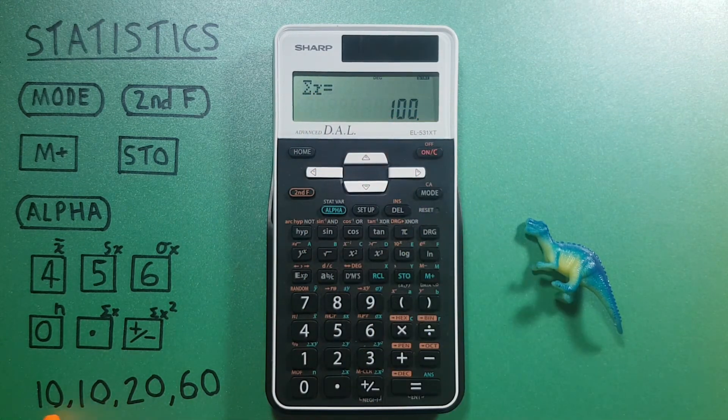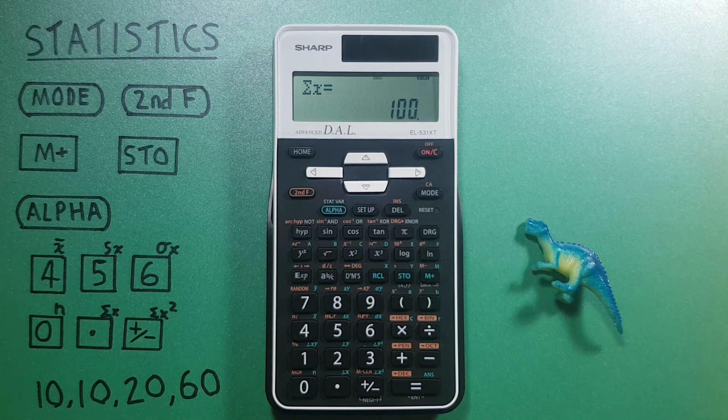Alpha decimal is the sum of the data. 100, there we go. 10 plus 10 plus 20 plus 60 equals 100.